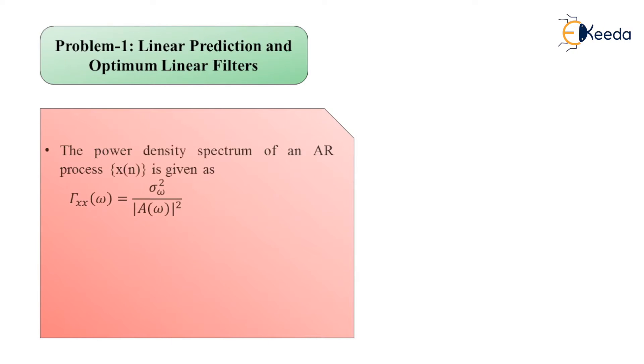Here we go with the problem statement that starts as: the power density spectrum of an AR process x(n) is given as gamma_xx(ω) equals σ_w² divided by the mod square of 1 minus e^(-jω) plus 1/2 e^(-j2ω), where σ_w² is the variance of the input sequence.